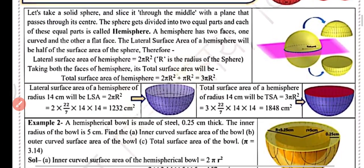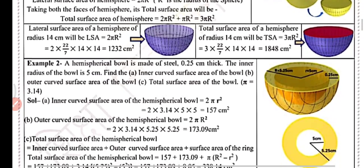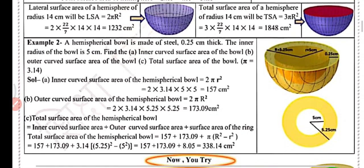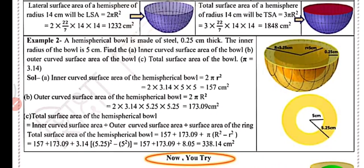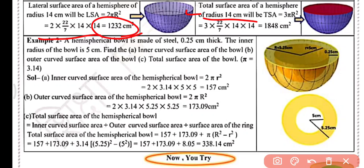The lateral surface area of a hemisphere of radius 14 centimeter equals LSA = 2πr². Putting all the values in and simplifying, you will get the lateral surface area, or curved surface area, equal to 1232 centimeter square.